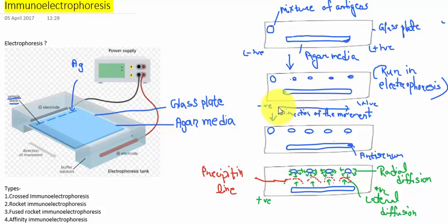This is all about the immunoelectrophoresis. In the next class we will discuss the details of the types of immunoelectrophoresis. This is a qualitative technique, as we are not dealing with any concentration of antigen or antibody — so it is called simple qualitative immunoelectrophoresis.